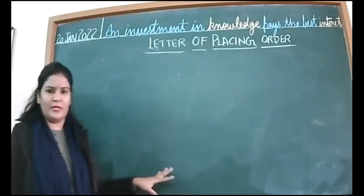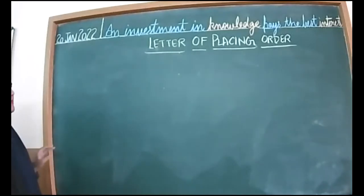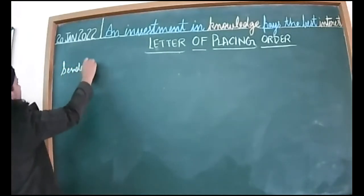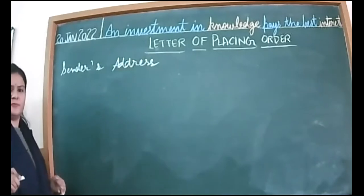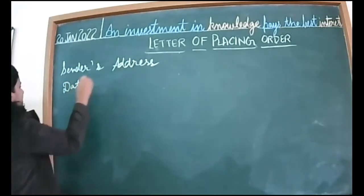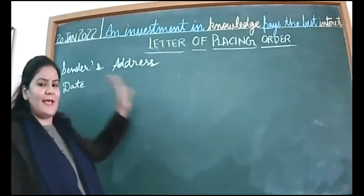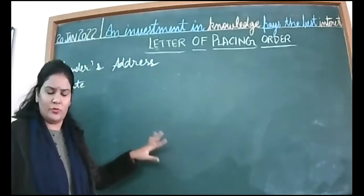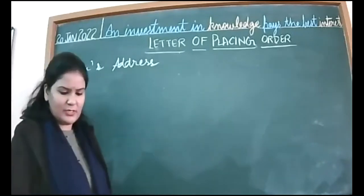Let's continue — you will write the format in your notebooks. We are going to discuss the format for placing an order. On the left side, write the sender's address, then skip one line and write the date. In the format we write the word 'date,' but in the actual letter you directly write the date, like '20th January 2022' — you do not write 'date ='.